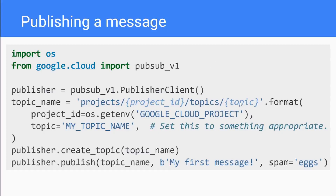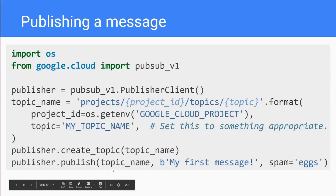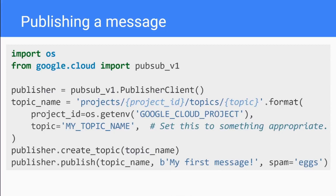To create the topic, call `publisher.create_topic()` and pass in the topic name path. To publish a message, use `publisher.publish()`, passing the topic name and a byte string. Bear in mind you always have to pass byte strings, not normal strings - PubSub is platform independent, and the receiving program might not be written in Python. Byte strings are the most platform-independent way of sending data. You can also specify metadata by passing a name and value alongside the message.